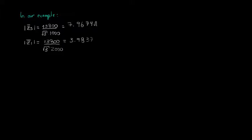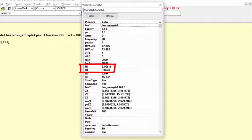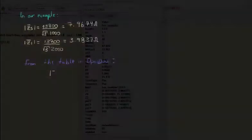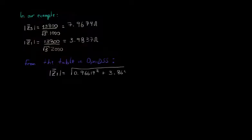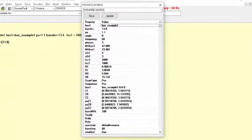Let's take our example as a demonstration. Applying these two expressions, we get that the module of ZS is equal to 7.9674 ohms and the module of Z1 is equal to 3.9837 ohms. From the table in OpenDSS, by taking the calculated values of R1 and X1, we can find that the module of Z1 is exactly equal to 3.9837 ohms, as expected. However, the value of the module of ZS is not shown in the table, as you can see. To check its value, we have two options.